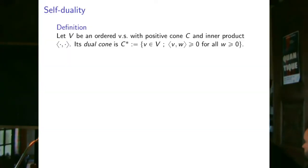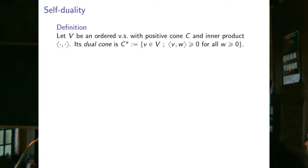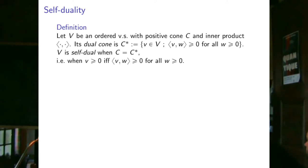Another property: if I have an ordered vector space with a positive cone C and an inner product, I can define a dual cone — all vectors in V that have non-negative inner product with all positive elements. We say V is self-dual when these cones coincide: v ≥ 0 if and only if ⟨v, w⟩ ≥ 0 for all w ≥ 0. It becomes a self-referential condition.